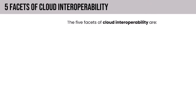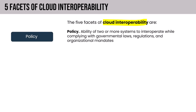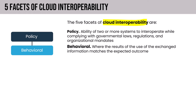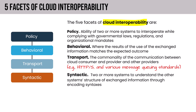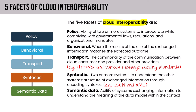The five facets of cloud interoperability are: policy — the ability to interoperate while complying with governmental laws, regulations, and organizational mandates; behavioral — the results of exchanged information match the expected outcome; transport — commonality of communication between cloud consumer and provider using known standard secure methods like HTTPS or message queuing standards; syntactic — two or more systems understand each other's structure of exchanged information through encoding syntaxes like JSON and XML; and semantic — the ability to understand the meaning of the data model within context.